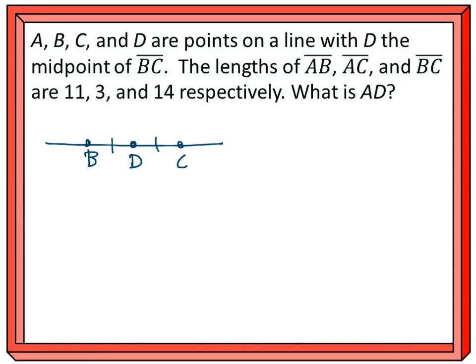The lengths of segment AB, segment AC, and segment BC are 11, 3, and 14 respectively. That just means in the order that they give it to us. So, AB is 11, AC is 3, and BC is 14.